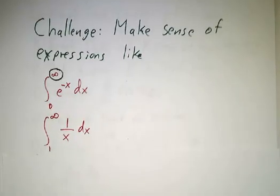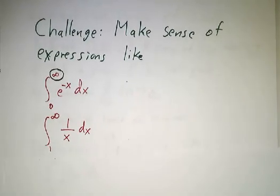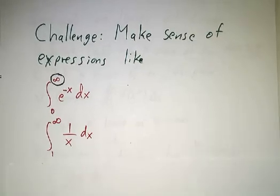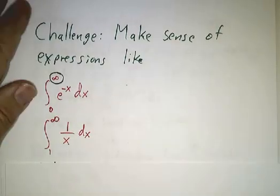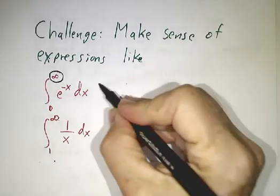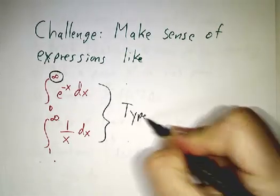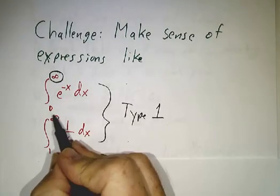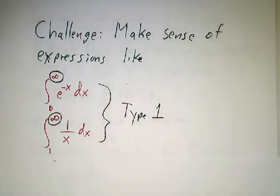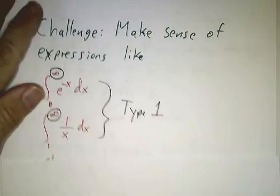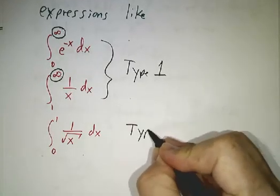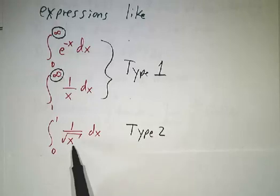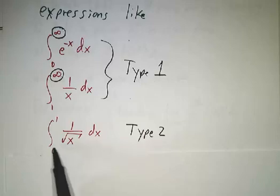We're also going to work another example which behaves a little differently, even though at first glance it looks the same — you're integrating a function from a number up to infinity. These are called Type 1 improper integrals, because they involve integrating a perfectly nice function all the way out to infinity. Type 2 involves a not-so-nice function — one that blows up as x approaches zero — but we'll see we can make sense of the integral anyway.